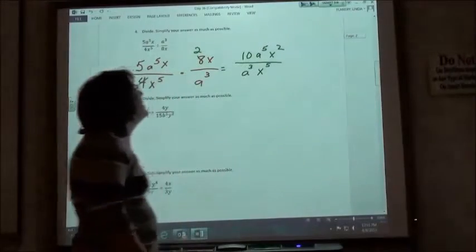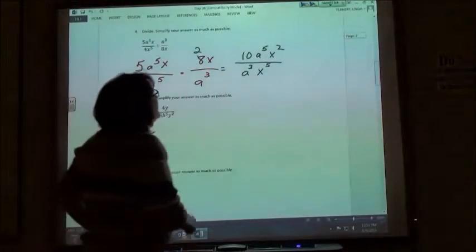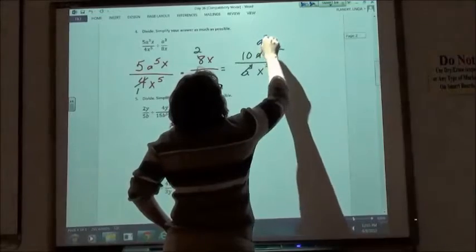So, reducing that, what are we going to do? We're going to knock out three a's. Which gives me a squared on top.